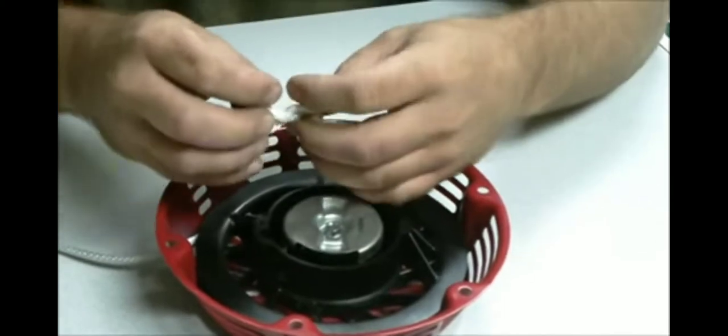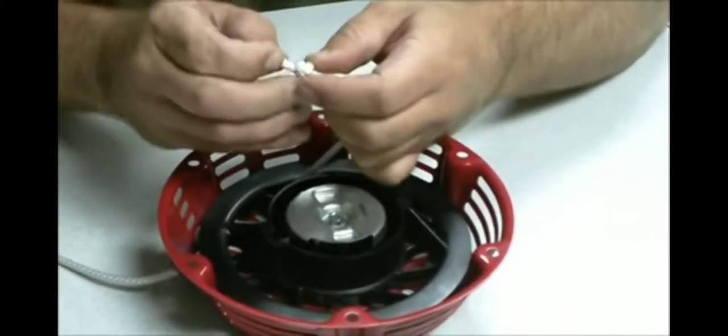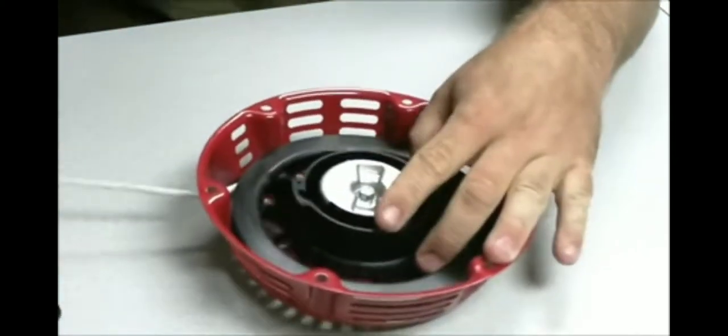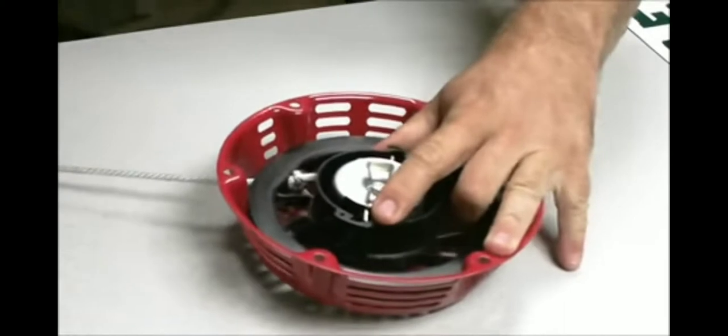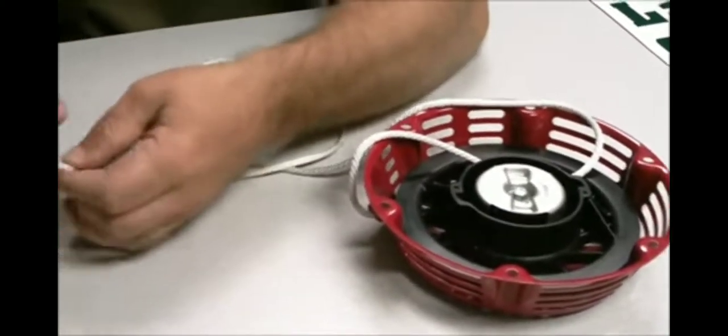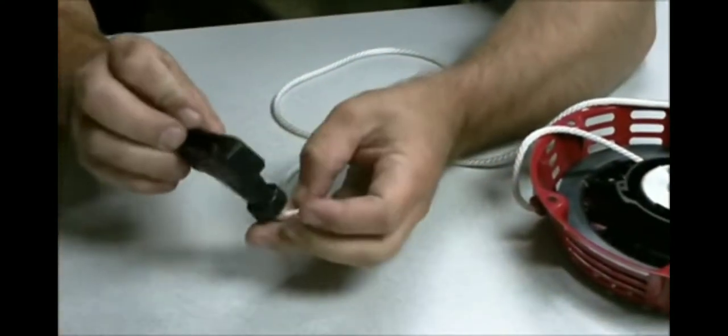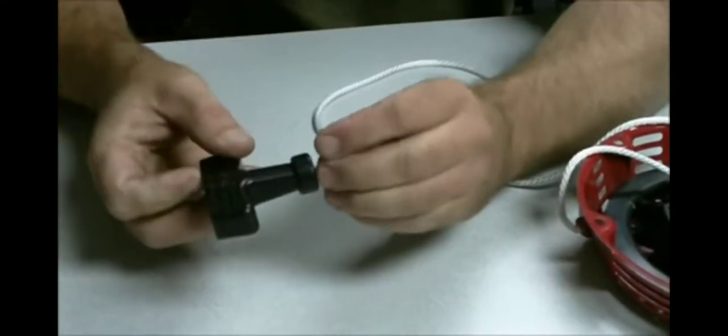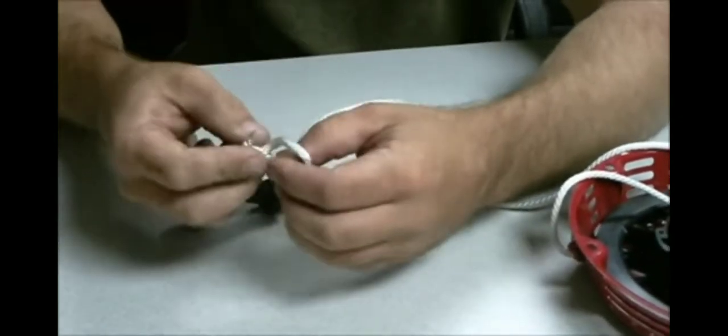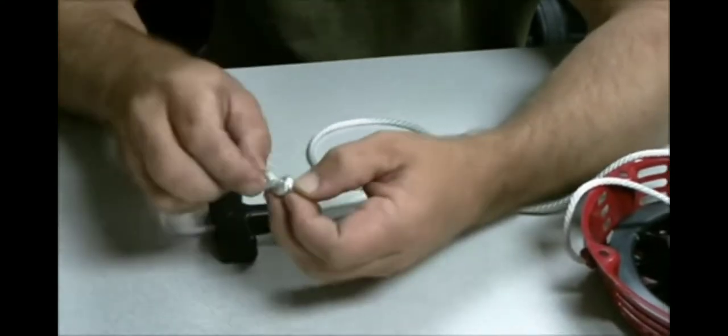Tie your knot. You don't want a very big knot in here because it can get bound up in the starter pulley. Once you get that on there, make sure you've got it good and tight. Run this end here through your starter handle. Tie a little bit bigger knot on this one so it doesn't pull through your handle here.